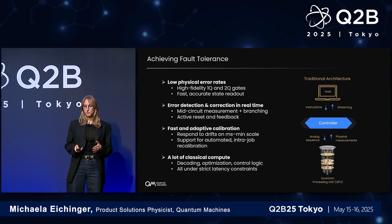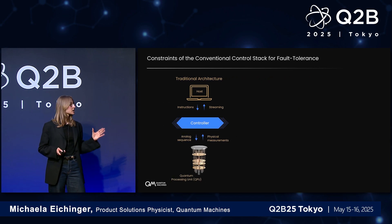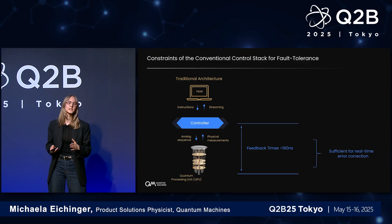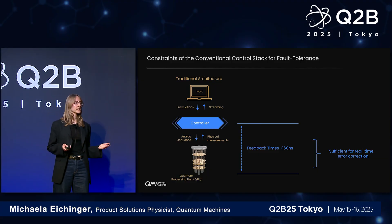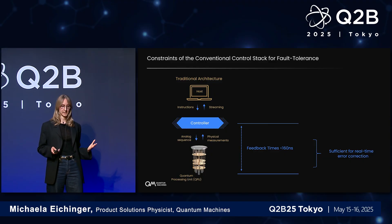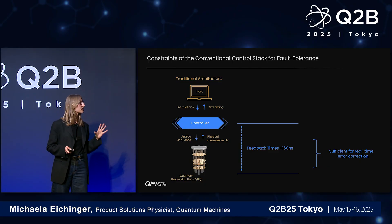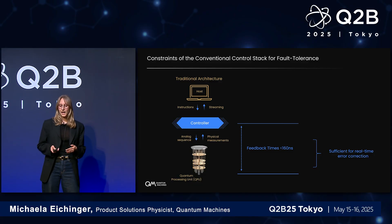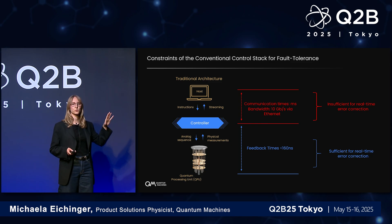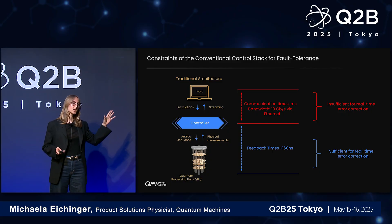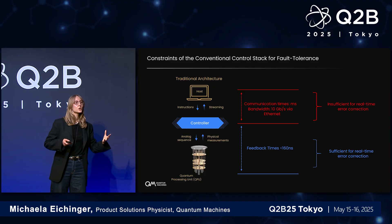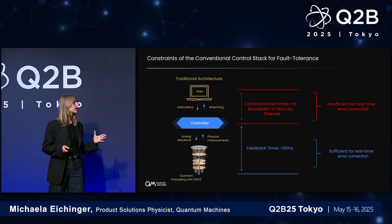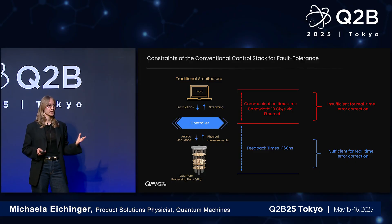If we evaluate our architecture, we can see that between the controller and QPU interface, things are looking very nice with regards to quantum error correction. Already now with controllers like the OPX 1000 — controllers that we at Quantum Machines build — you're able to have very fast feedback times under 160 nanoseconds, meaning in an ultra-low-latency manner you can update parameters of your pulse sequences. However, looking at the top layer of the stack, the communication between the controller and the host is actually in the millisecond range, because typically we connect our controller with an Ethernet cable to the lab computers. This is insufficient for real-time quantum error correction, and research in the field shows that much faster communication is required.